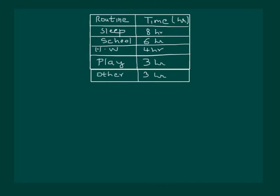Consider this table showing a child's routine for the day. In a day, he sleeps 8 hours, he goes to school for 6 hours, does his homework for 4 hours, plays for 3 hours, and does other things for 3 hours.